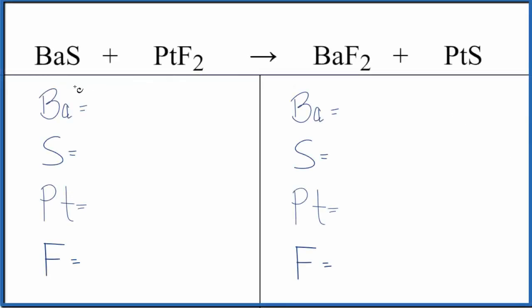Let's balance this equation and then look at the type of reaction. We have BaS and PtF2 - barium sulfide and platinum(II) fluoride, also called platinum difluoride. The first thing we need to do is count the atoms up.